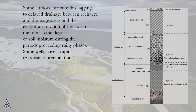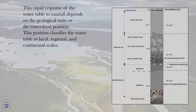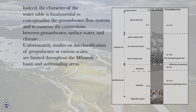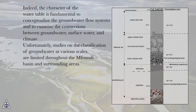Some wells have a rapid response to precipitation. This rapid response of the water table to rainfall depends on the geological units or the water level position. This position classifies the water table at local, regional, and continental scales. Indeed, the character of the water table is fundamental to conceptualize the groundwater flow systems and to examine the connections between groundwater, surface water, and climate. Unfortunately, studies on the classification of groundwater at various scales are limited throughout the Mifundi Basin and surrounding areas.